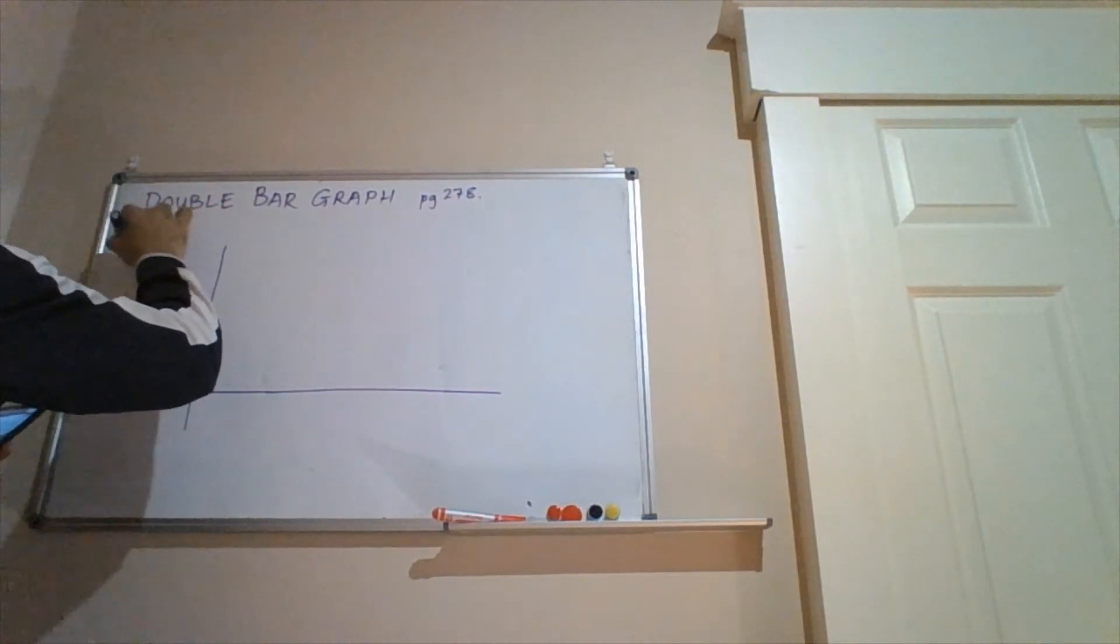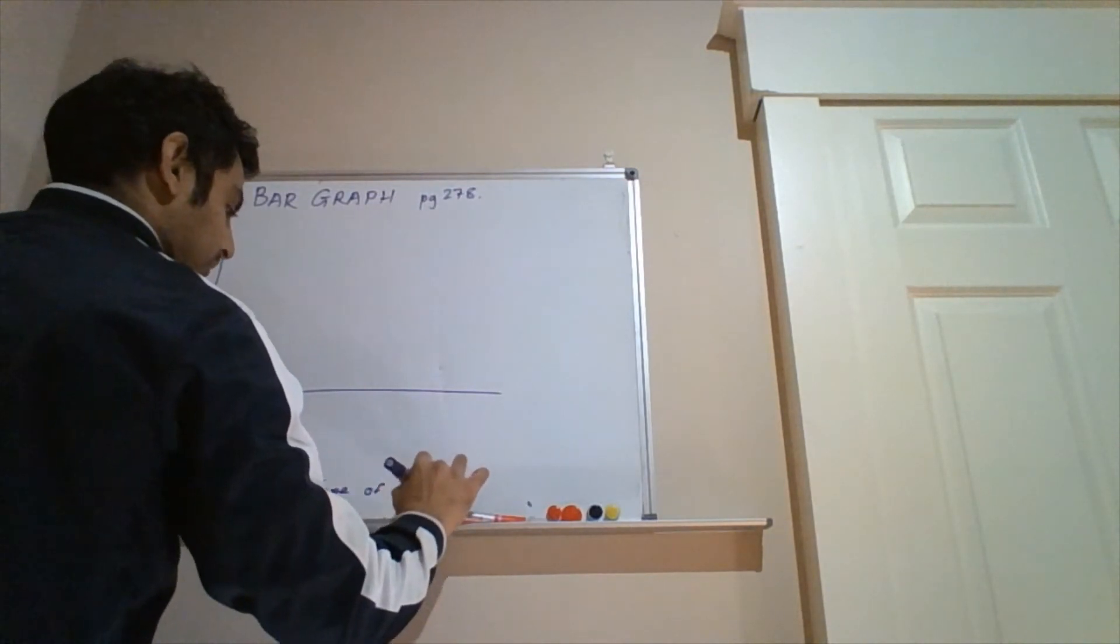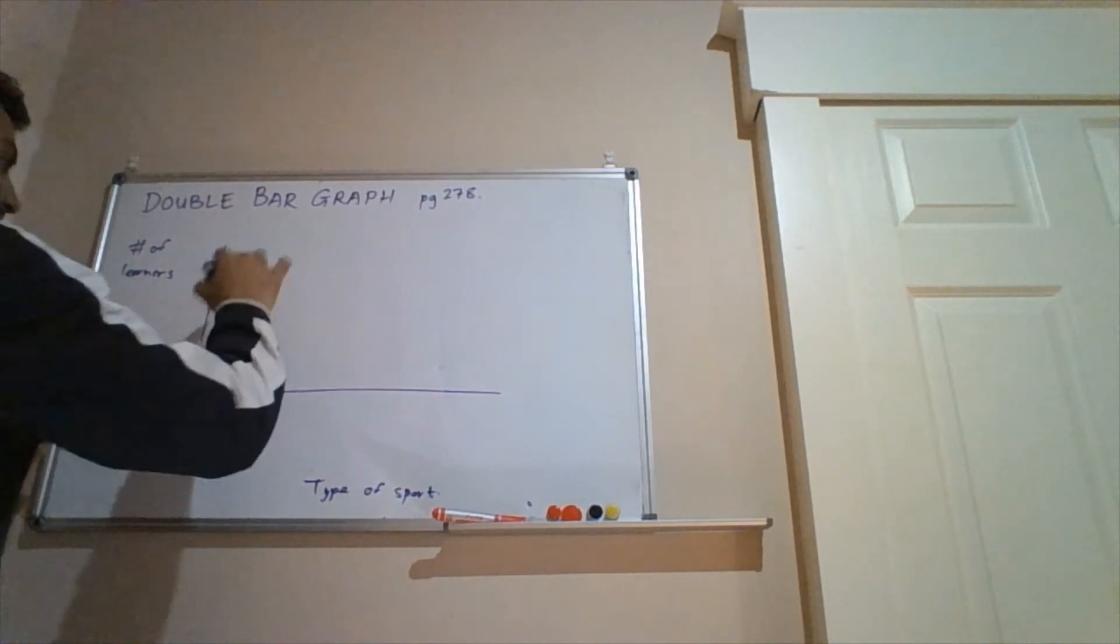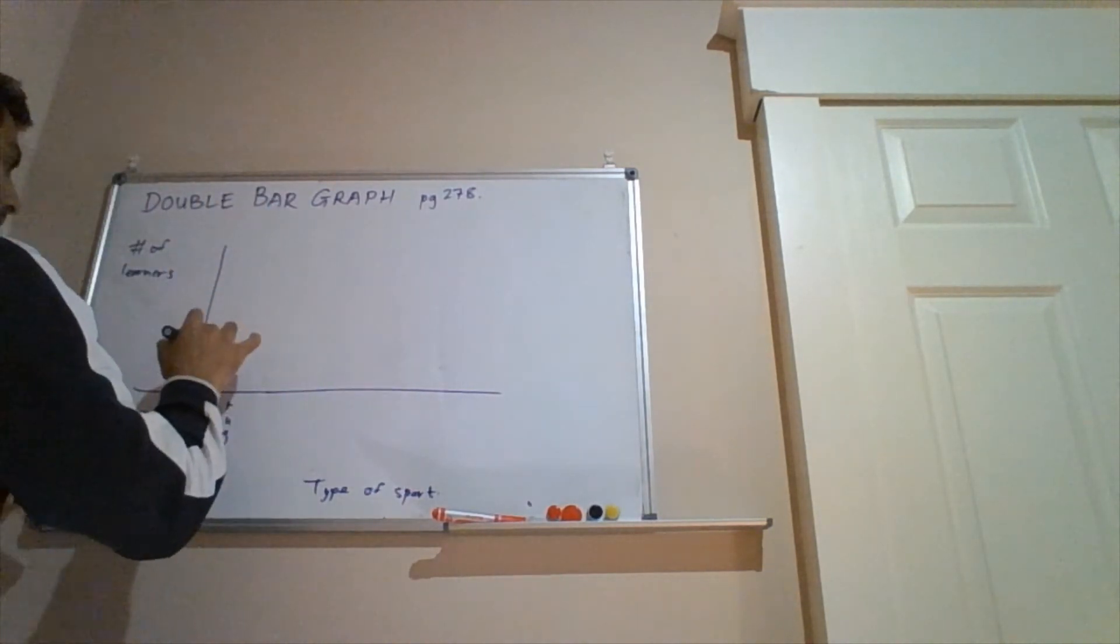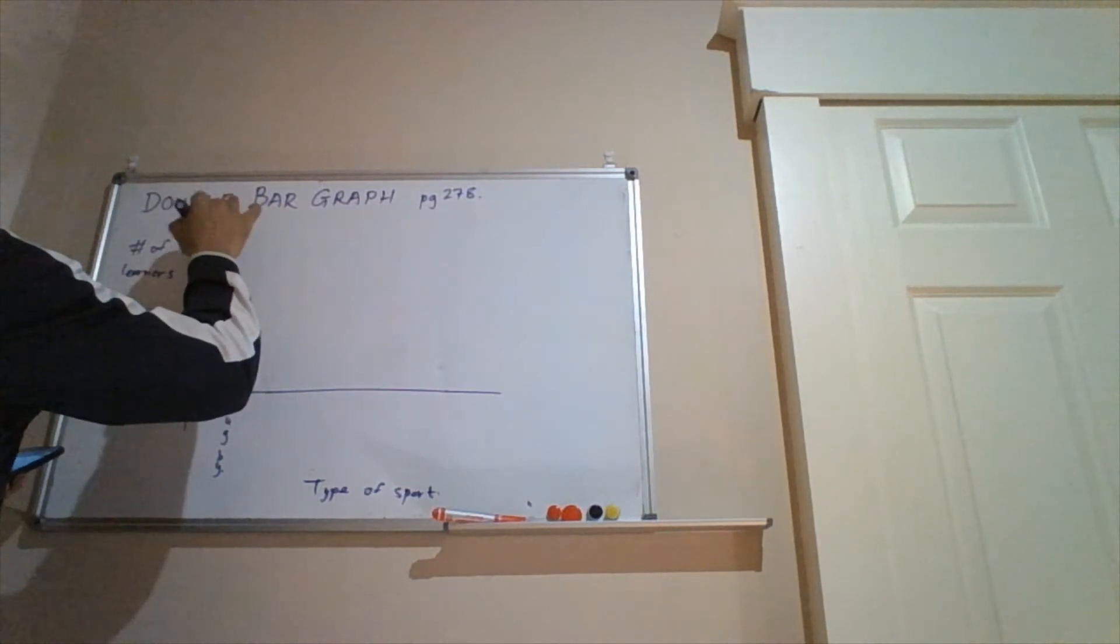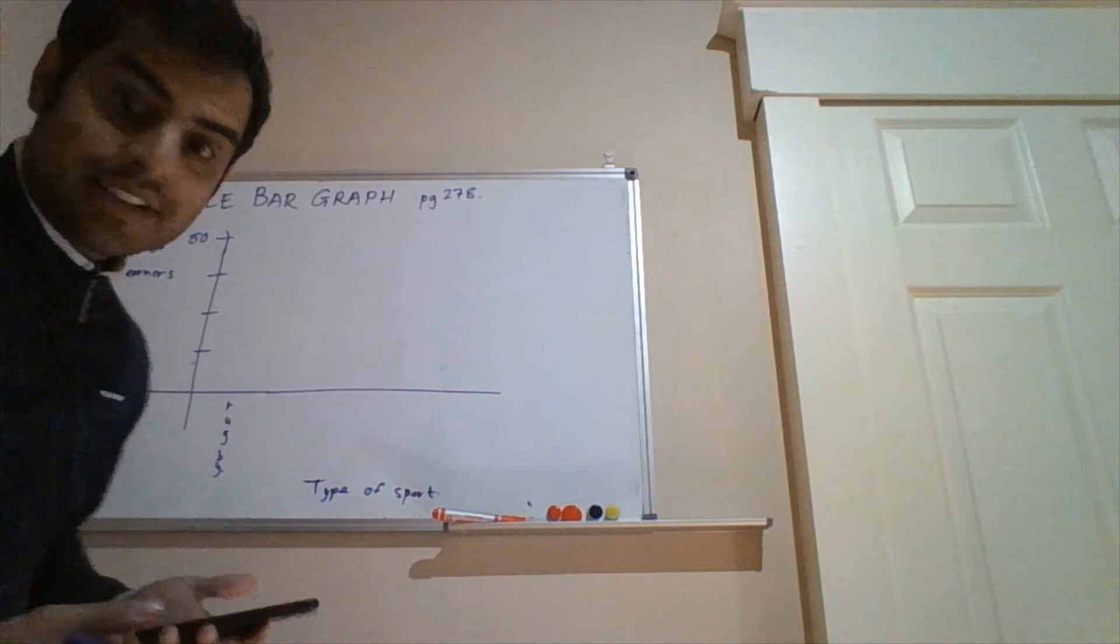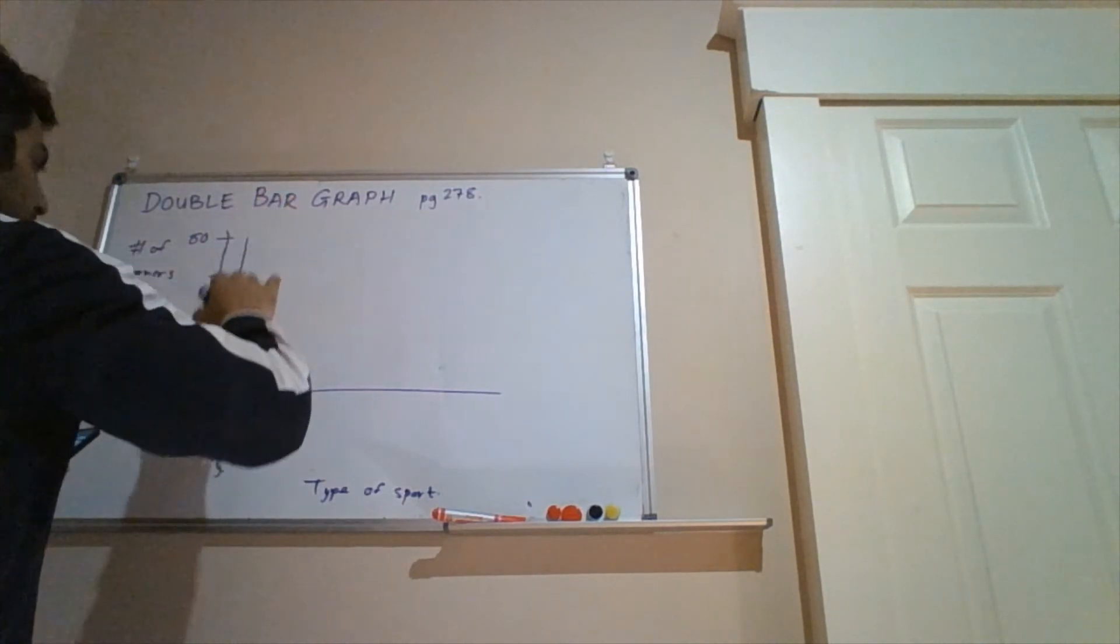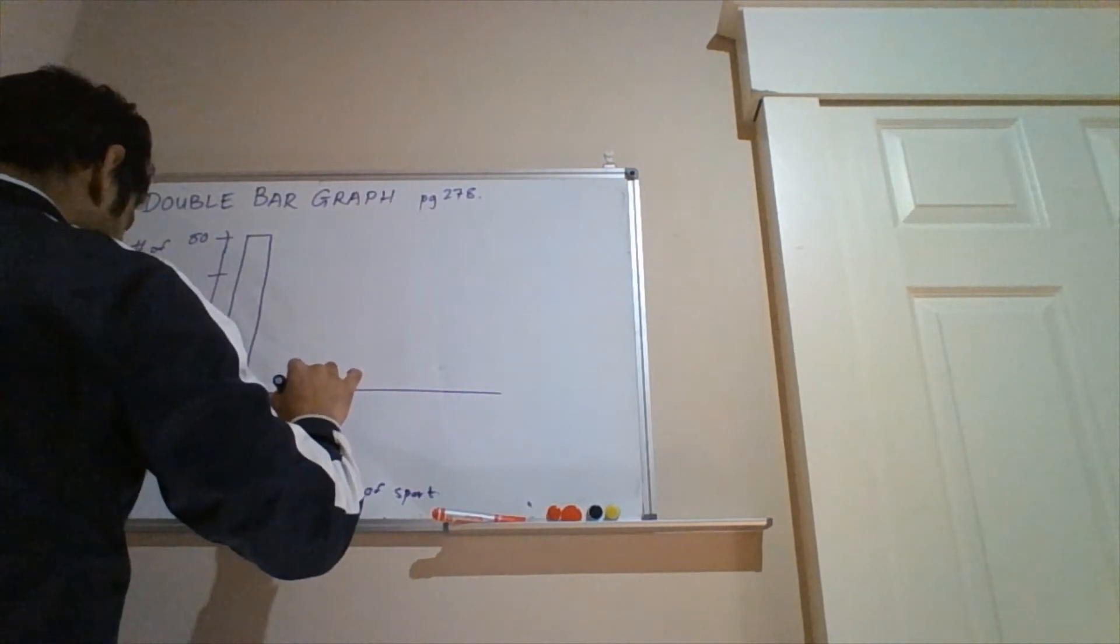And once again, vertical axis is dependent variable. Number of learners depends on the type of sport. So we've got rugby. So we just need a single bar here for 80. I think our highest goes up to 80. So I'm just going to go up in 20. So 20, 40, 60, 80. Okay, so once again, I only have to write the 80 because we can see there's 1, 2, 3, 4. So 4 goes into 80 20 times, and that tells us the intervals are each 20. So for rugby, we've got 80, so that's right at the top here. Okay, and the number of girls is 0. So we just leave a space and move on to the next sport, netball.